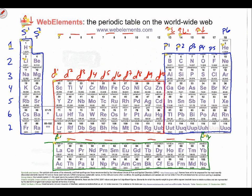The D block has electrons going up, down, up, down, up, down, up, down, up, down — ten electrons in five orbitals. The F block will have 14 of them: seven ups and seven downs. The electron will spin up first and then spin down.